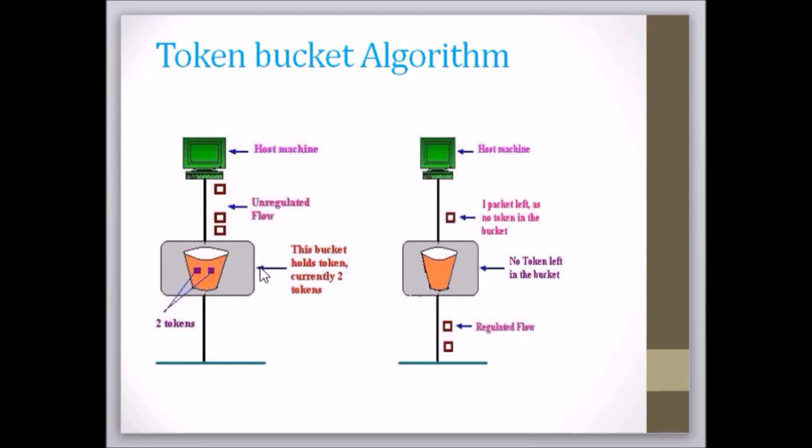In the first figure, the bucket holds two tokens and three packets are waiting to be sent out of the interface. In the second figure, two packets have been sent consuming two tokens and one packet is still left.